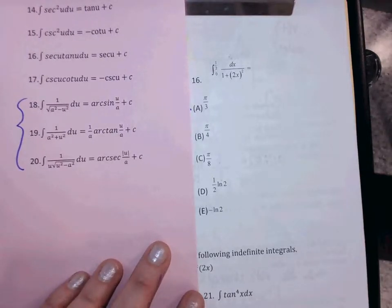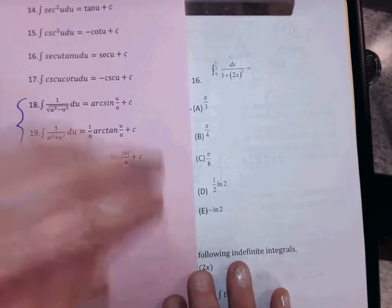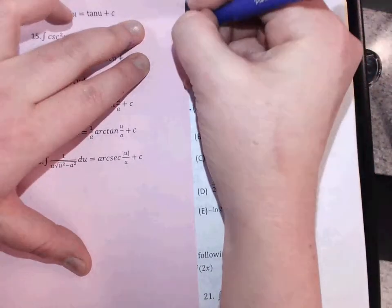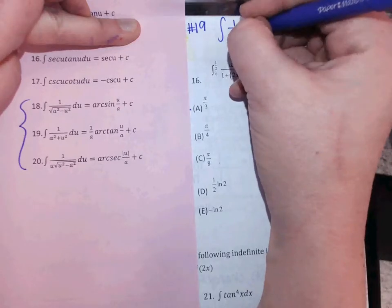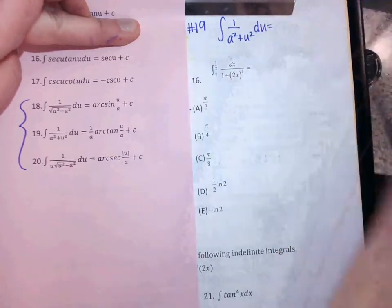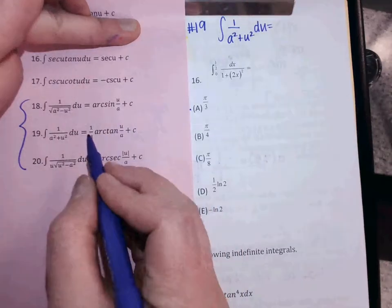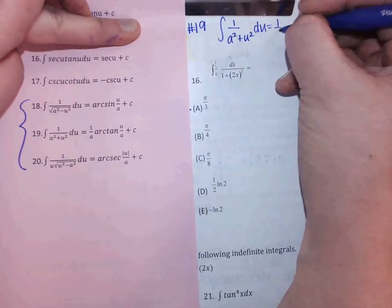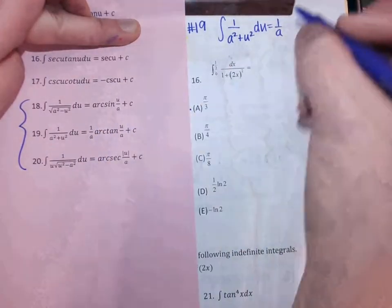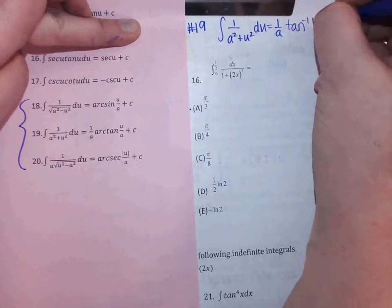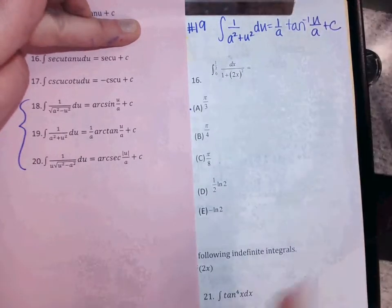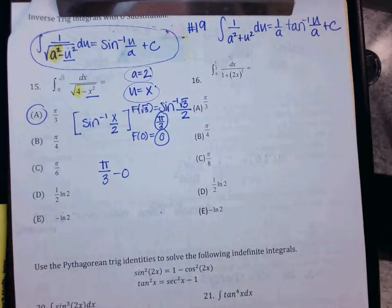We already did rule 18, so the next problem is probably rule 19. Look at rule 19: the integral of 1 over (A squared plus U squared) DU equals 1 over A times inverse tan of (U over A) plus C. This one has a 1 over A constant in the front, then inverse tangent — you can write arc tan or tan to the negative 1. Then U over A plus C.